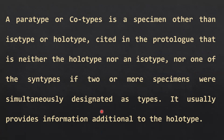Next, paratype, also known as cotype. A paratype or cotype is a specimen cited in the protolog that is neither the holotype nor an isotype, and neither one of the syntypes if two or more specimens were simultaneously designated as types. It usually provides information additional to the holotype.